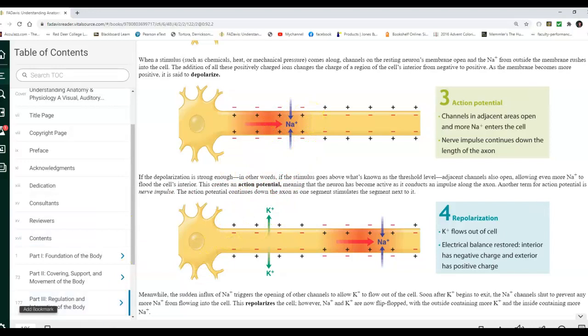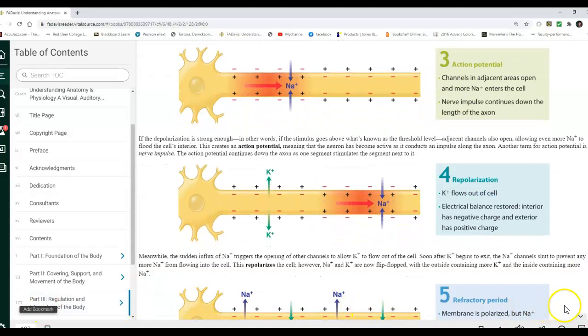Once it gets positive inside, it will open potassium gates. The potassium gates open, and by concentration gradient the potassium flows out. And it is now negative again, so it is repolarized.